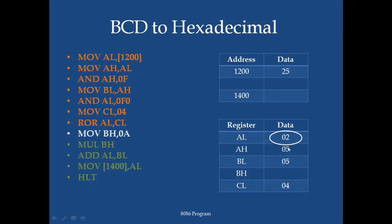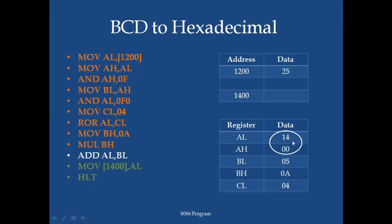Now this 2 is to be multiplied by 0A, which is moved into BH. After multiplying, AL becomes 14 and AH becomes 00. Then 5 is added, and after adding we get the value 19, which is the hexadecimal equivalent.